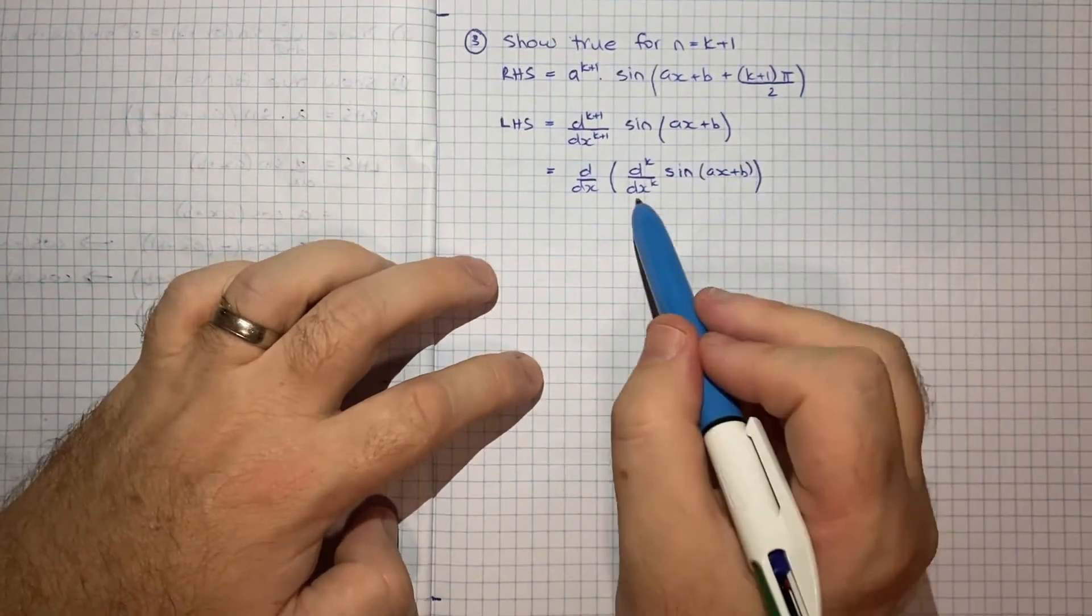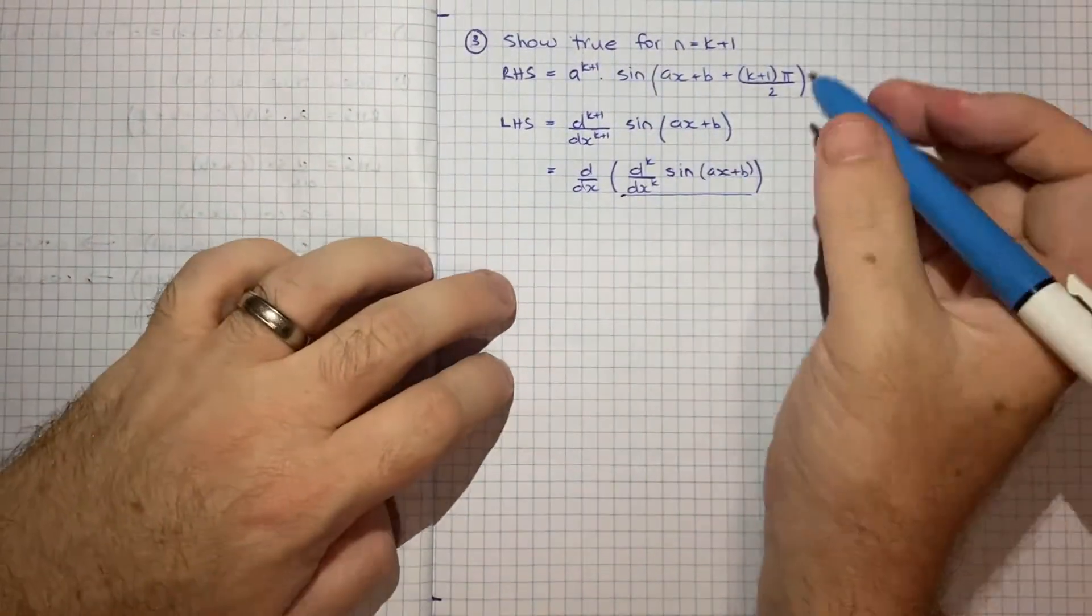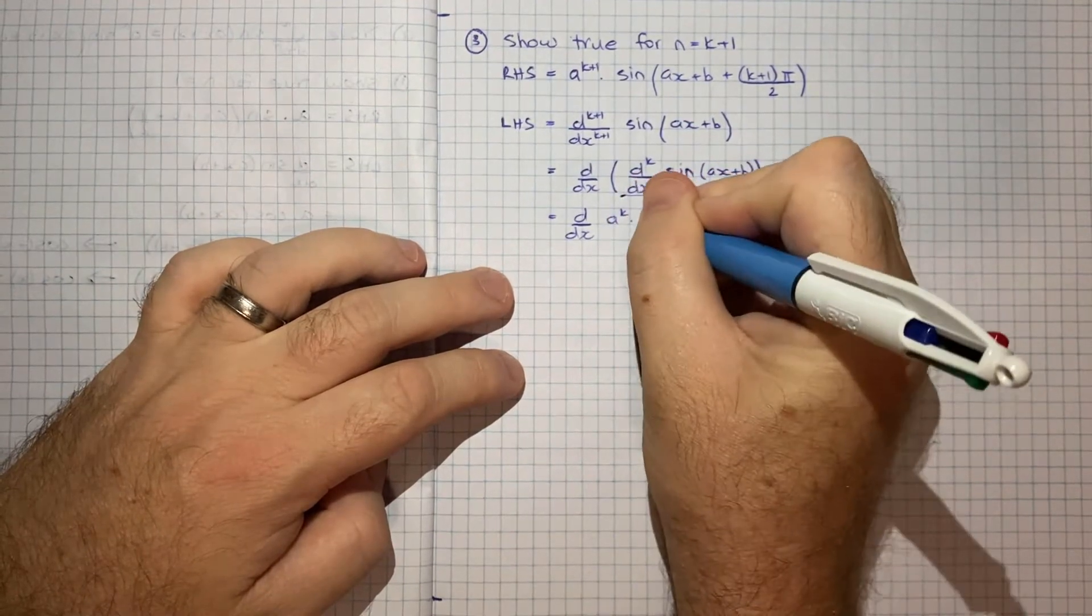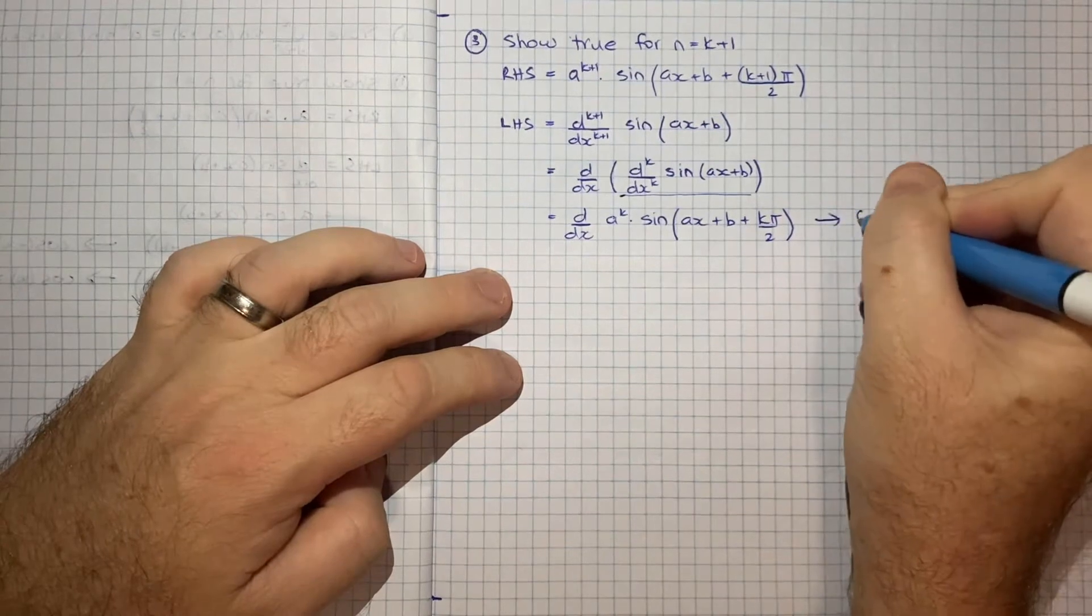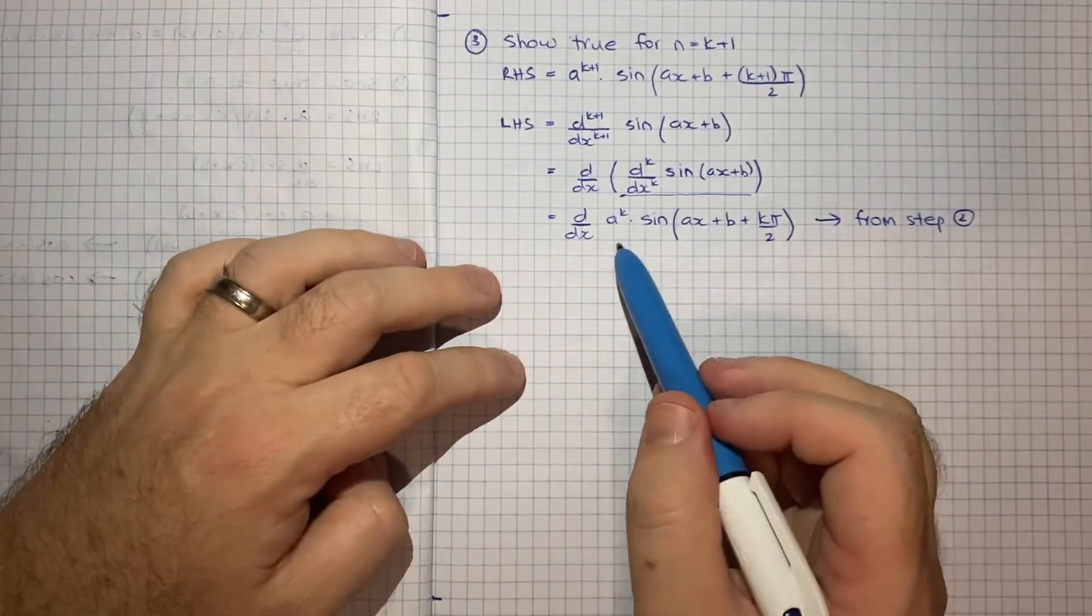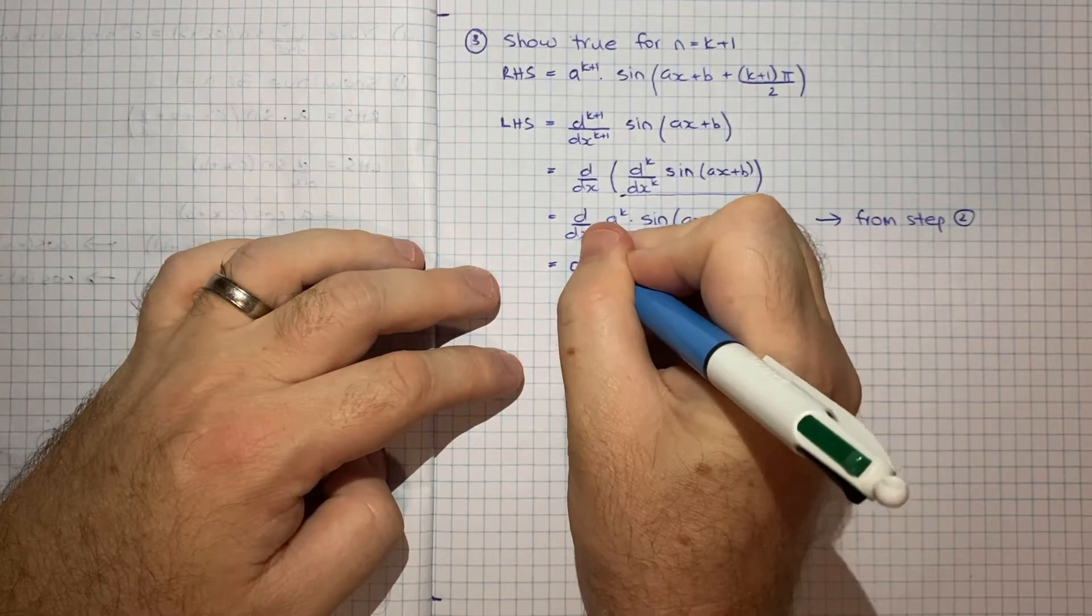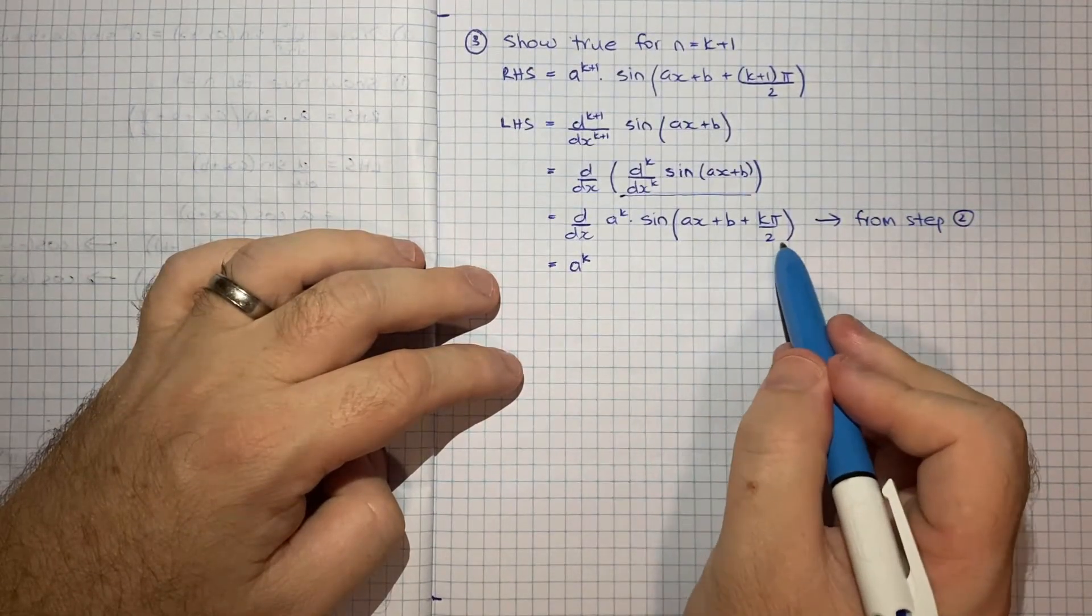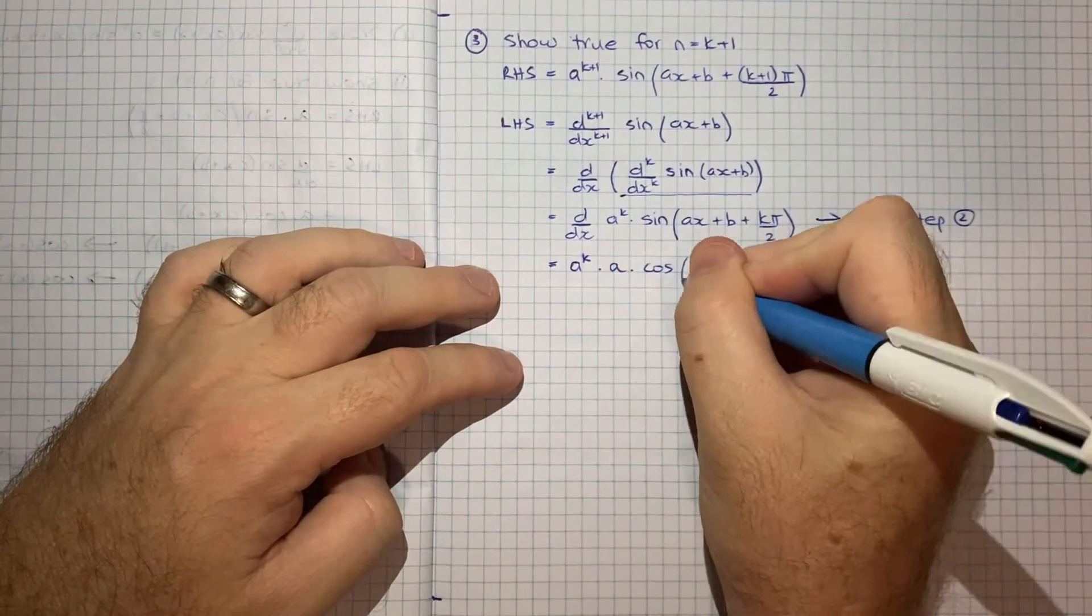Because what you do is you take the kth derivative and you differentiate it again. That's how you get the k+1th derivative. So I'll just write that out. So what we can do now is this bit in here we can link to what we've assumed to be true in step 2. So what I can say is that that is the same as the derivative of a^k times sin(ax+b+kπ/2). And that's from step 2 of our induction. Okay well now what we can do is we can find the derivative of this with respect to x. So the a^k will come out the front because that doesn't have x in it.